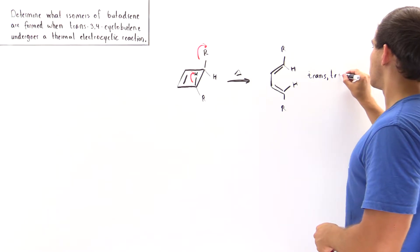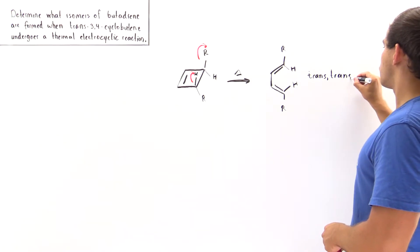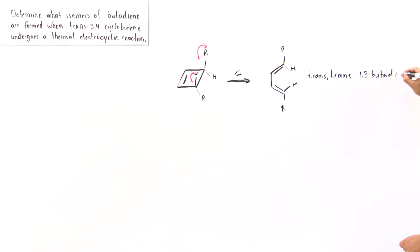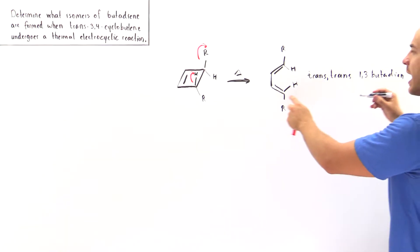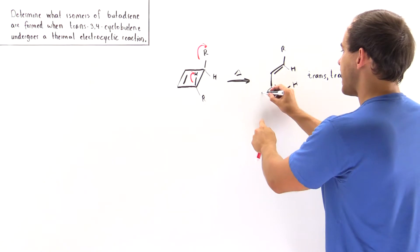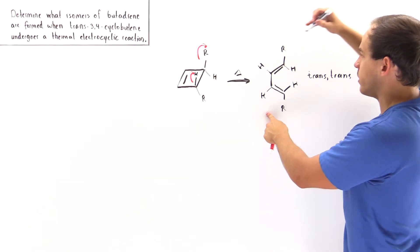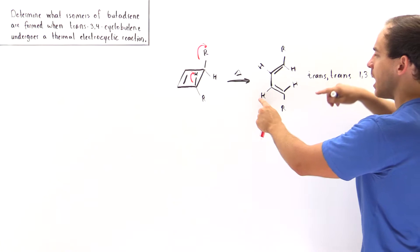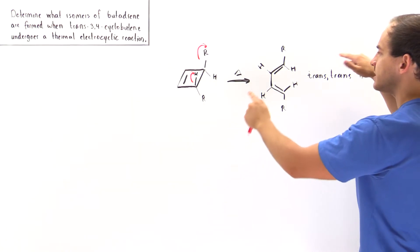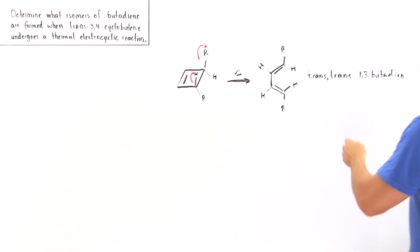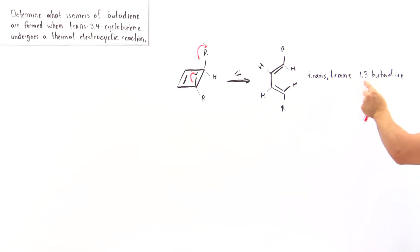So this gives us trans-trans-1,3-butadiene. The reason it is trans is because on the first double bond the H groups point opposite to each other, and on the second double bond the H groups also point opposite to each other. So we have trans-trans-1,3-butadiene.